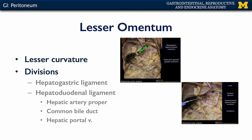The second constituent is the hepatoduodenal ligament, which runs between the liver and the duodenum, and it conducts three major structures ascending to the porta hepatis: the hepatic artery proper, the common bile duct, and the hepatic portal vein.